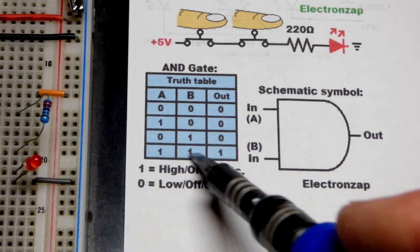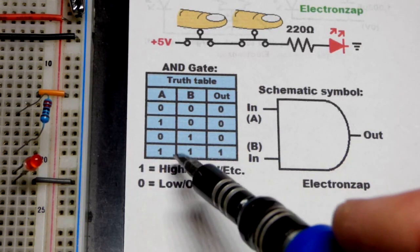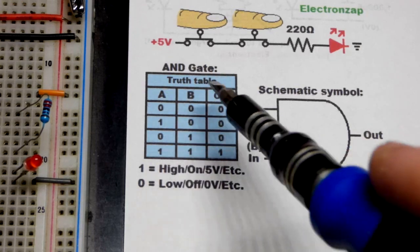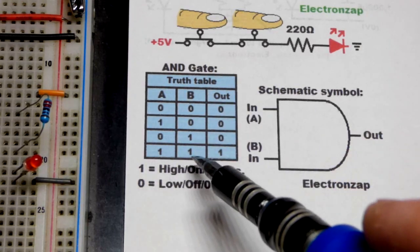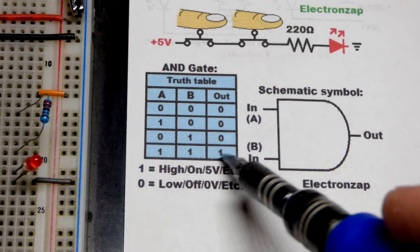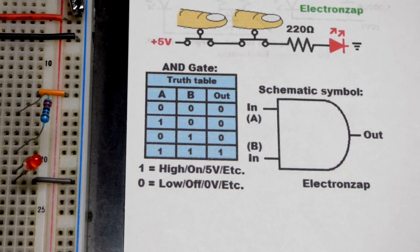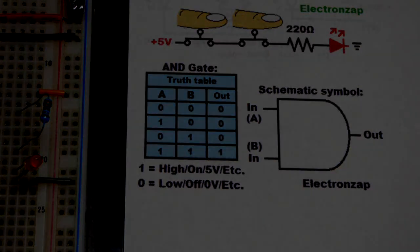So if there's, let's say, six inputs, all six inputs have to be on or high for the output to be on or high. That's the basic rule. So in any case, that's it, hope you enjoyed.